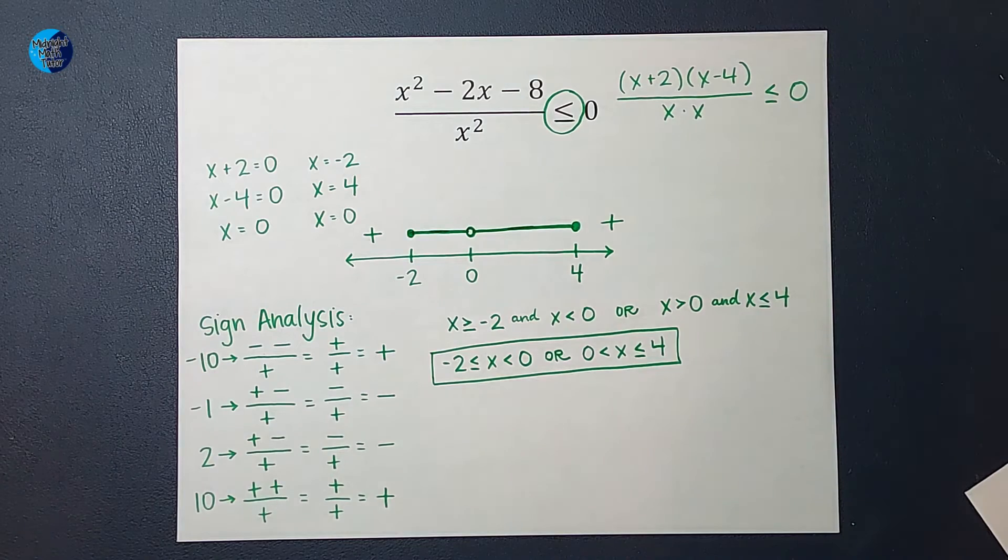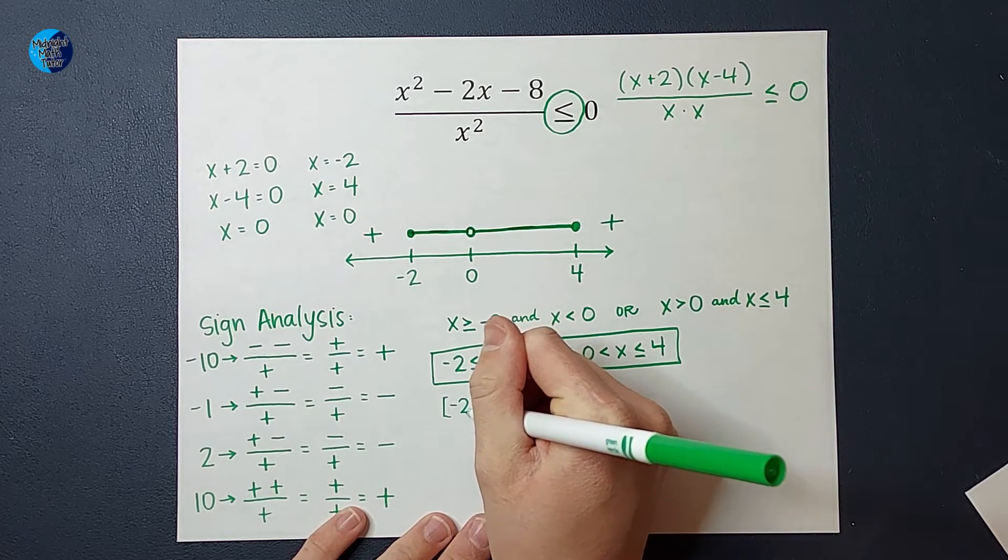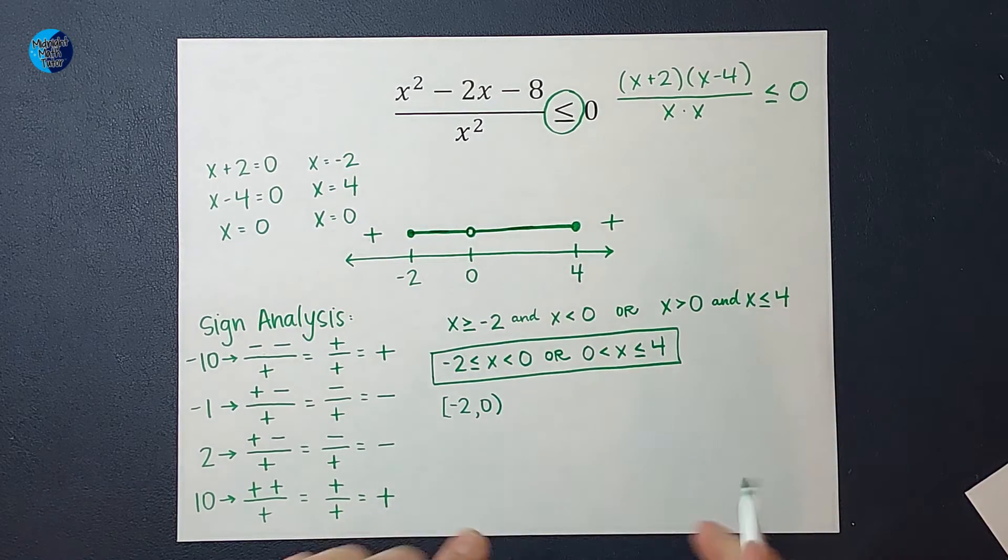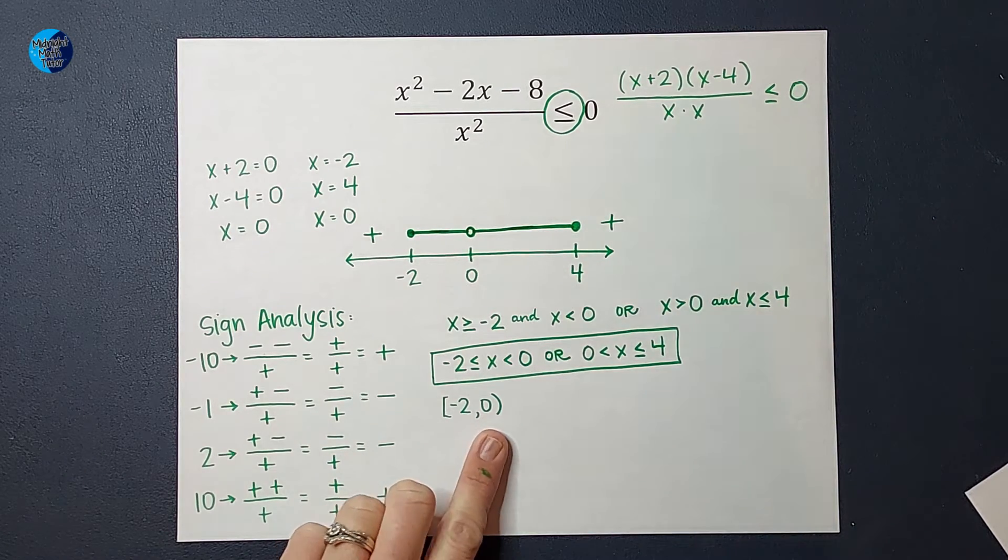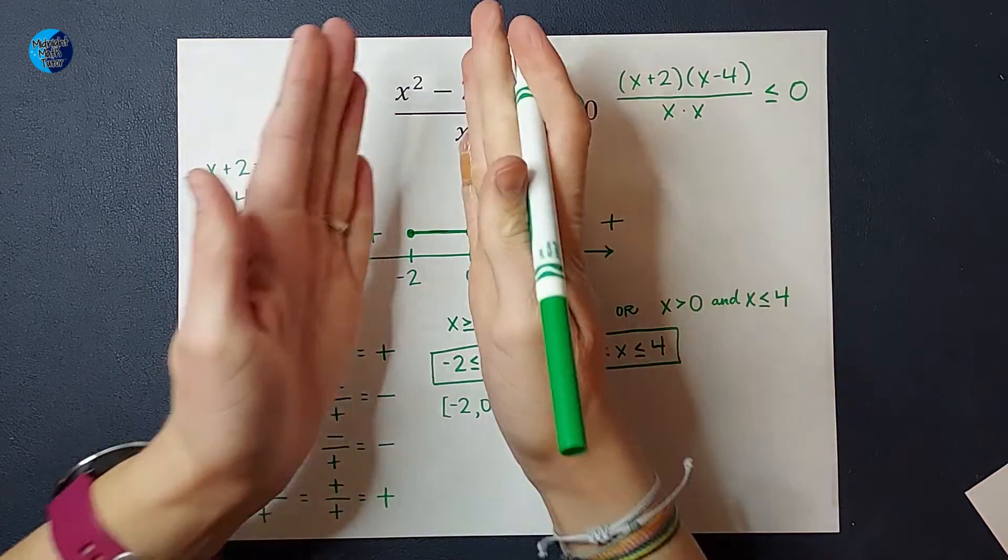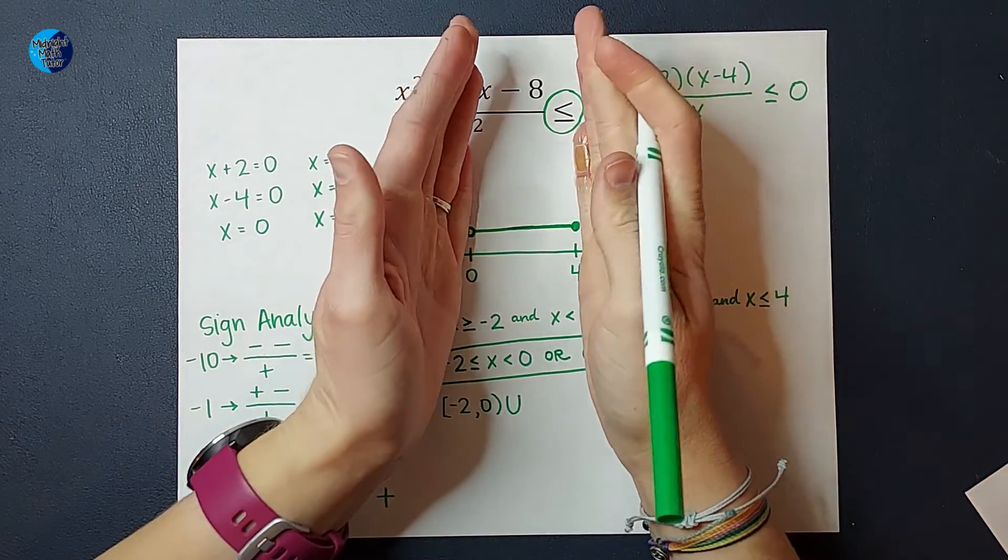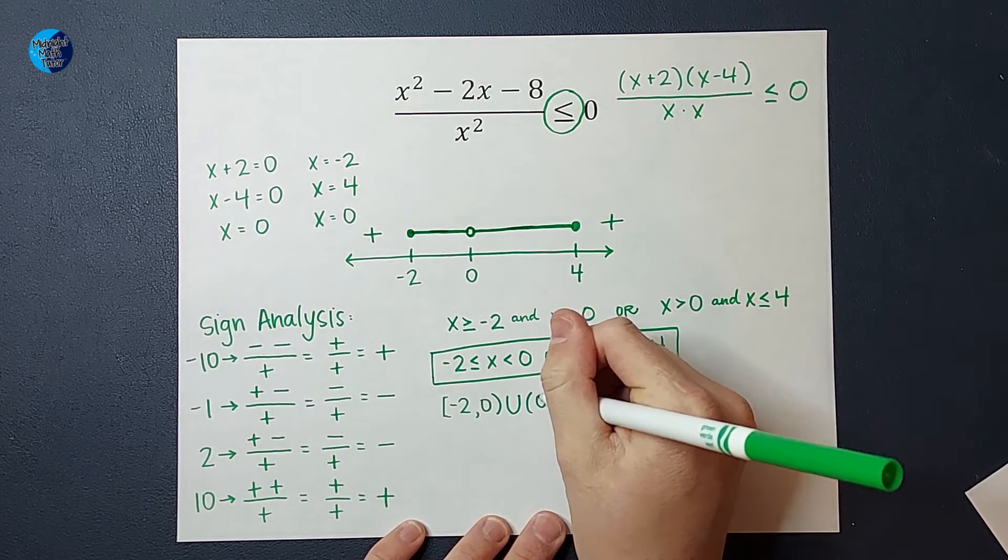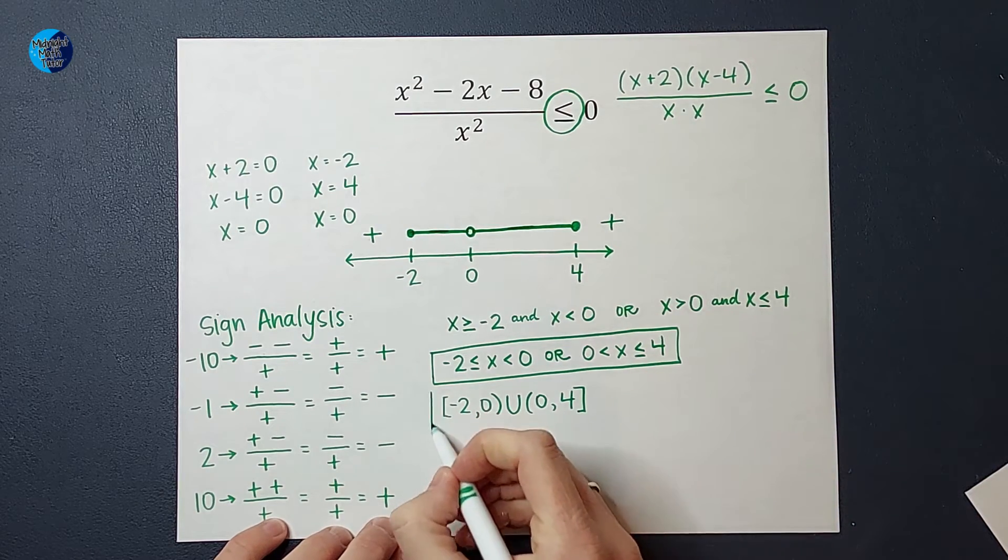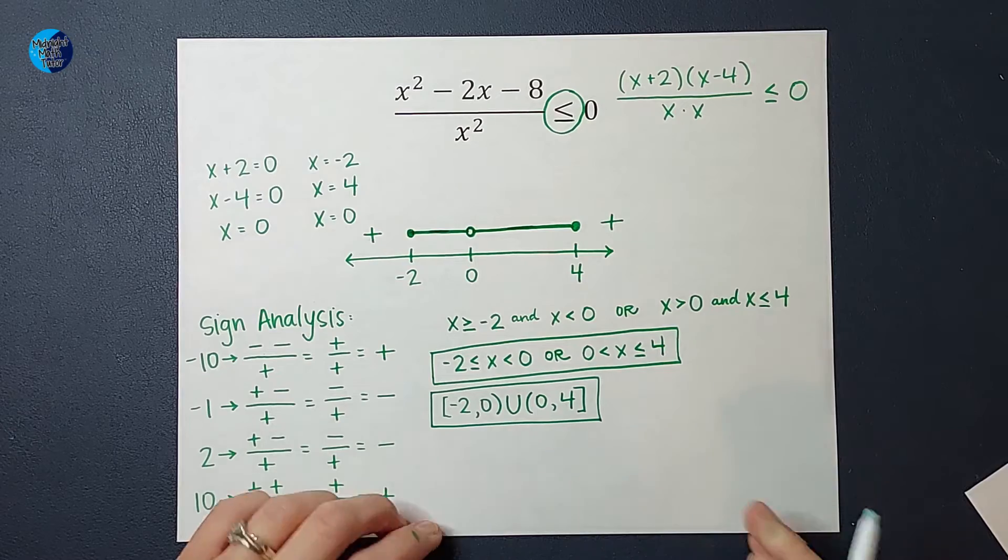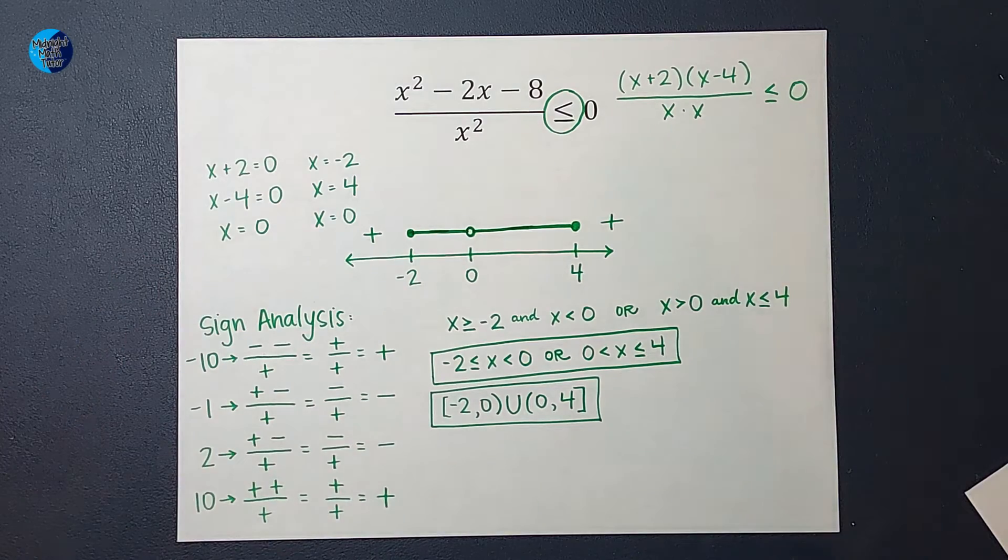Isn't that cool? Alright, if you wanted to write this in interval notation, we would do a bracket negative 2 to 0 with a parenthesis. Negative 2 gets a bracket because of this closed circle because you can use negative 2. 0 gets the parenthesis because you can't use 0. So that represents this section. And then we say we put a U for union, meaning that's together with this side, where you can pick something from 0, not including 0, to 4. And again, 4 gets a bracket because you can use 4. So again, these are the same answer. One is in inequality notation. One is in interval notation.